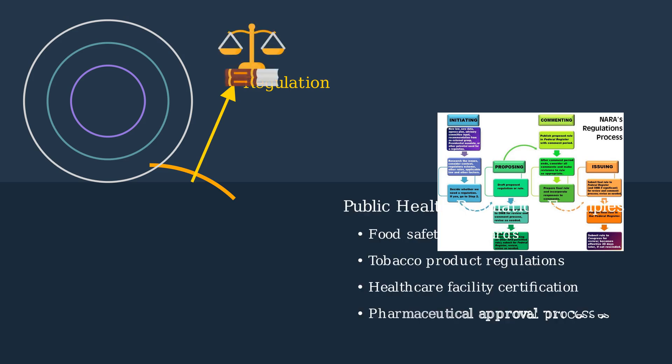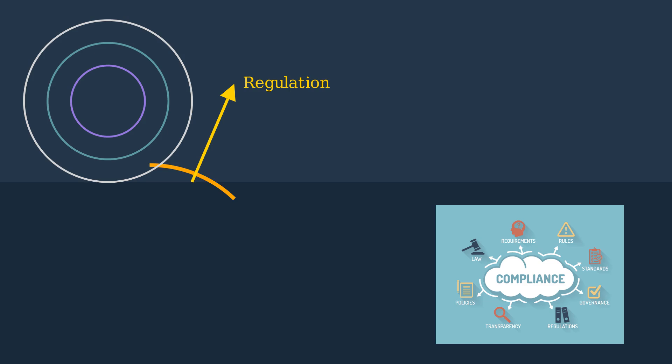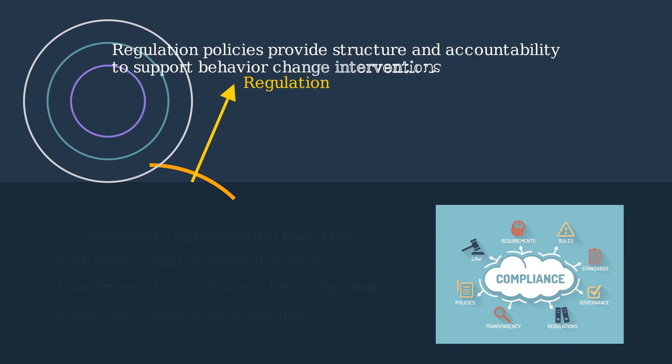In public health, regulations include food safety standards, tobacco controls, health care facility certifications, and pharmaceutical approval processes. Effective regulation requires compliance mechanisms that encourage adherence to established rules and standards. Regulation directly connects to several intervention functions including restriction, environmental restructuring, and enablement. Regulation policies provide the necessary structure and accountability to support effective behavior change interventions.